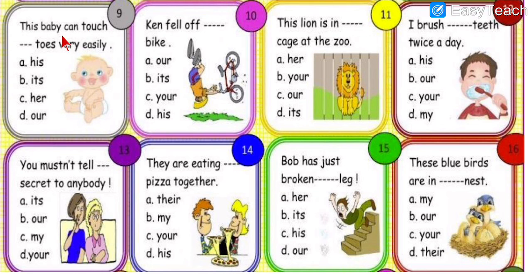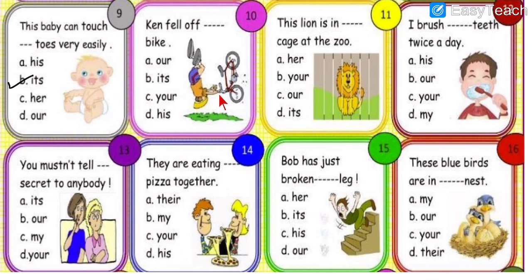Number nine: the baby can touch dash toes very easily. For a baby we use 'it.' So: the baby can touch its toes very easily. Number ten: Can fell off dash bike. Can is a boy, so for a boy we use 'his.' Can fell off his bike.